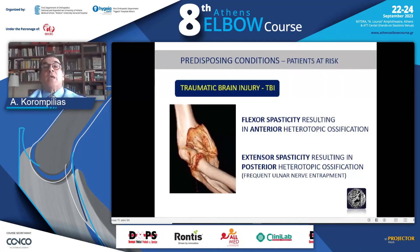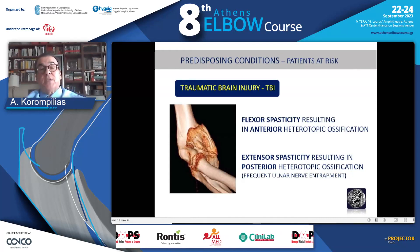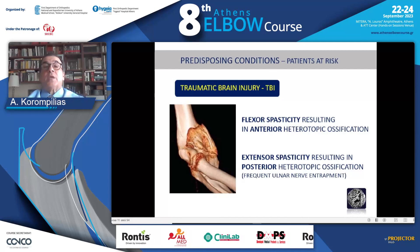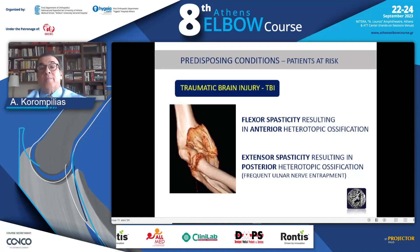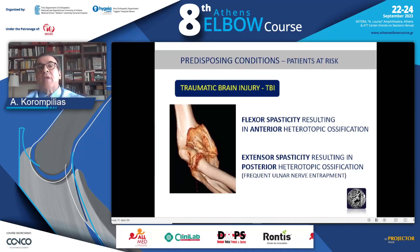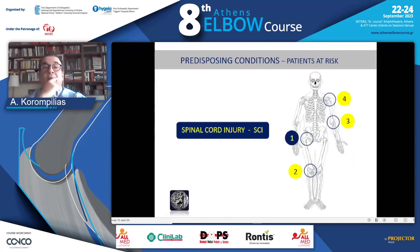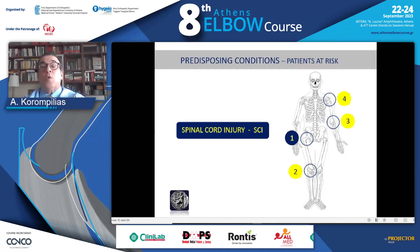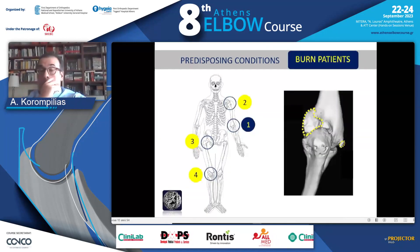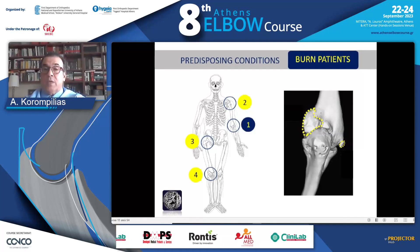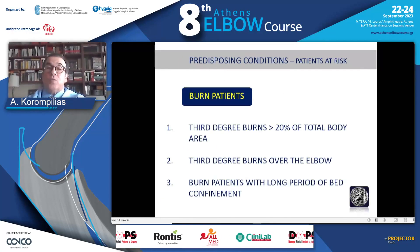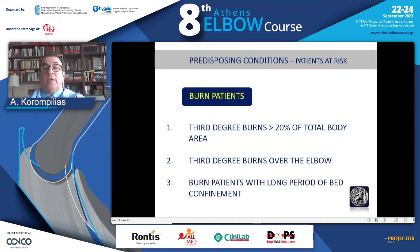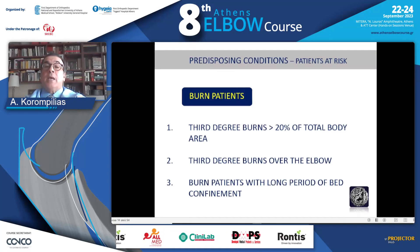When heterotopic ossification is in the anterior part of the elbow, this results in flexor spasticity. When it develops in the posterior side, this leads to extension spasticity, and in this case we frequently see ulnar nerve entrapment. Never forget spinal cord injury, where elbow heterotopic ossification is the third most common site, and always keep in mind burn injuries, where elbow heterotopic ossification is the first site — seen in patients with 30-degree burns anywhere on the body, especially those who are bedridden for long periods.